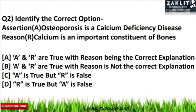The second question is an assertion and reasoning type. The assertion statement is: osteoporosis is a calcium deficiency disease. The reason statement is: calcium is an important constituent of bones. Try to identify the correct option.